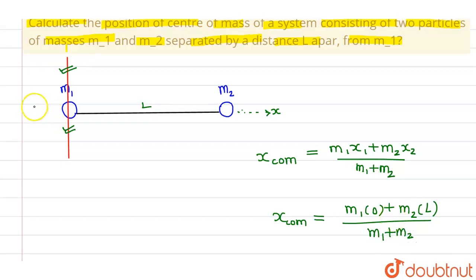What we get is the position of center of mass from block m1 as x_com which is m2 L divided by total mass m1 plus m2.